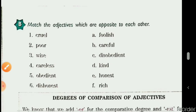Now we will start with Exercise B: Match the adjectives which are opposite to each other. On the left side some adjectives are given, and their antonyms are given on the right side. We need to match the antonyms.